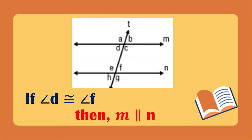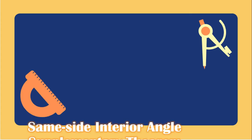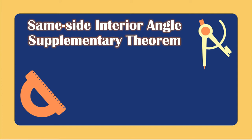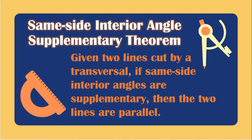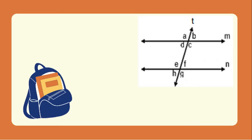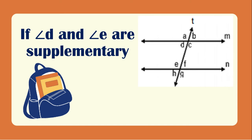The conclusion is M is parallel to N since the alternate interior angles are congruent. The same side interior angles supplementary theorem states: given two lines cut by a transversal, if same side interior angles are supplementary, then the two lines are parallel. In this figure, angle D and angle E are supplementary since they are same side interior angles.